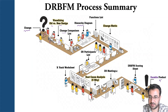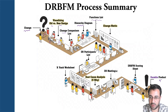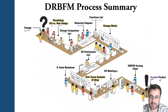In that same sheet, you create the functions list — you list each part mentioned in the hierarchy diagram and define what the function of that part is and how it plays in the overall assembly of the system. Then you move to one of the big steps in your DRBFM sheet after the visualization: the change matrix.